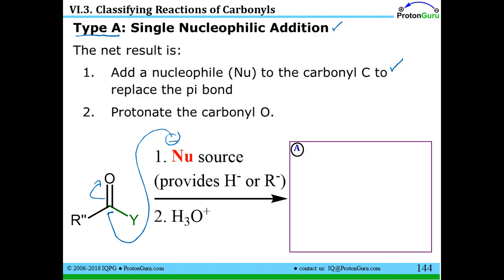You've added it to this carbon. Carbon has four bonds, can't have five bonds. So the thing that the nucleophile bond replaces is the pi bond. The second thing you do is you protonate the oxygen. After this step, the nucleophile has attached.